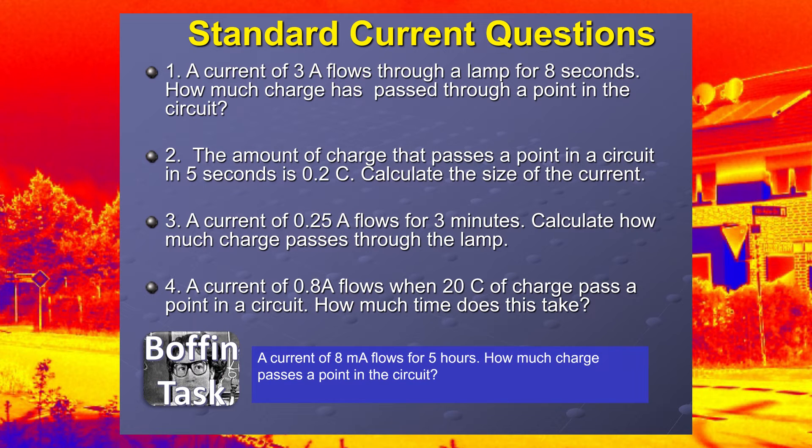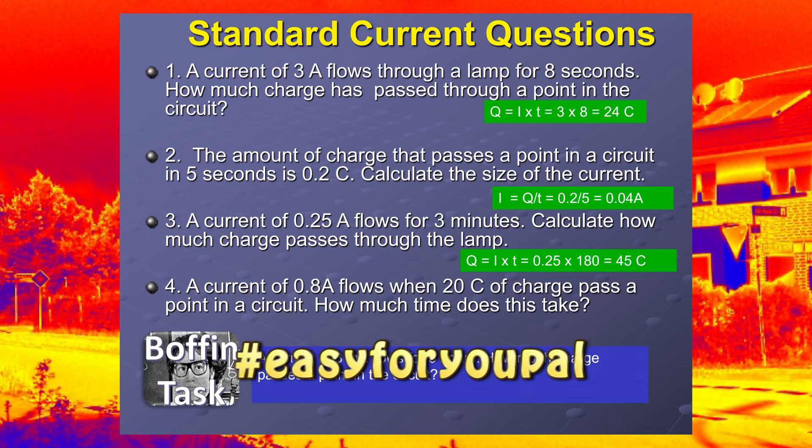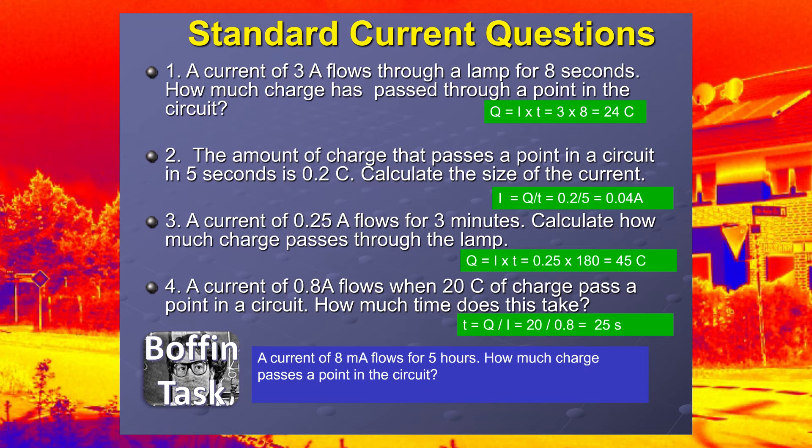Here's the answers. So watch out for the tricks. That's straightforward. That's easy peasy. Here, little trick there with the minutes. Question 4, that's easy as well. And oh, the boffin task. Let's have a look at that. It's milliamps. Milliamps is 10 to the minus 3. Milli is a thousandth of an amp.